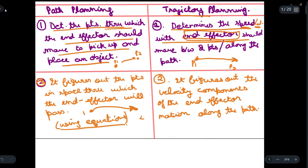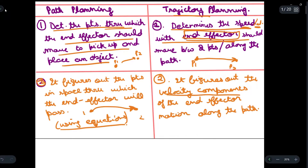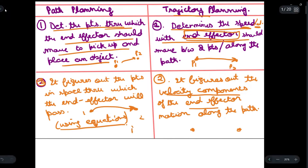In trajectory planning, the velocity components of the end effector will also be considered. We can say that path planning is the simplest part — just finding out the path through which the manipulator should travel. In trajectory planning, we determine the speed, the time, and the velocity with which the manipulator should move in order to find an optimal path.